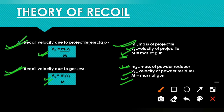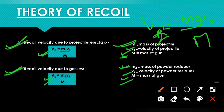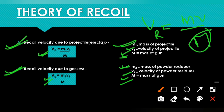The basic formula is: capital V equals small m times small v divided by capital M. You can modify this formula — if you want to find velocity due to projectile, write Vp with M1 and V1; if you want velocity due to gases, write Vg with M2 and V2. This way you can differentiate between the two. Similarly for total recoil velocity, the same basic formula applies.